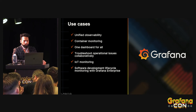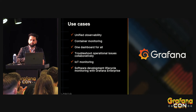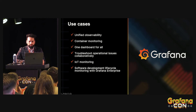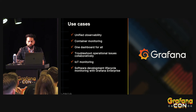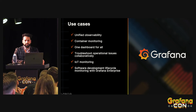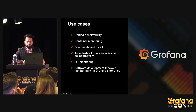Before I play the video, let's talk about some of the use cases we've seen customers use Grafana for at AWS. One is unified observability — you can use Amazon Managed Grafana to centralize and correlate data into a single dashboard. You can also use it for container monitoring; for example, if you're using Amazon EKS or Amazon ECS, you can integrate with CloudWatch and create dashboards and share them with others.